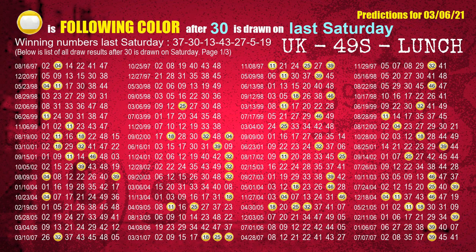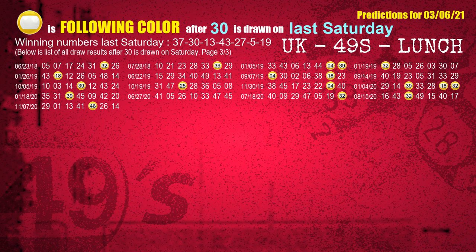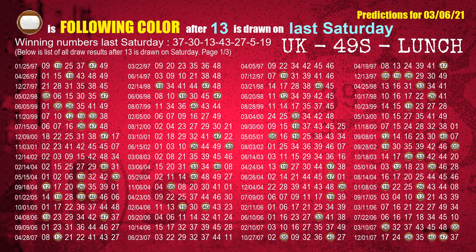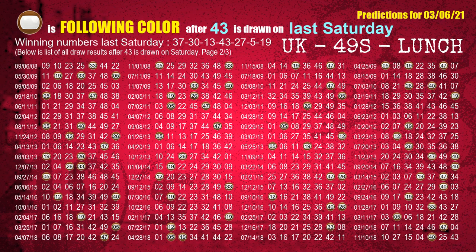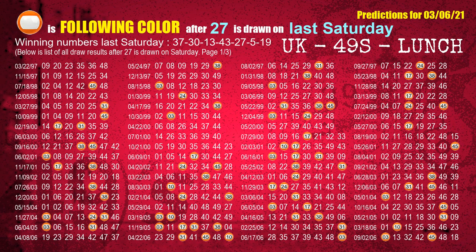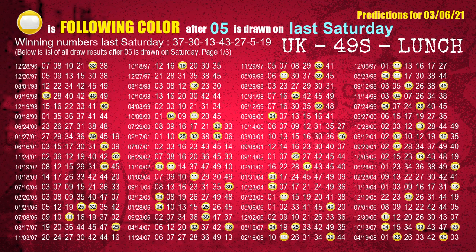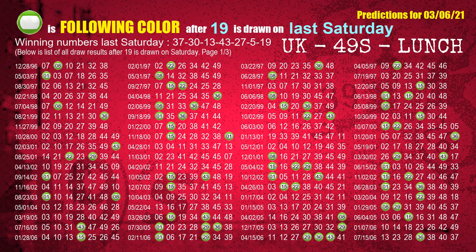The second winning number last Saturday is 30. The most frequently following color is yellow when 30 is the winning number on last Saturday. The third winning number last Saturday is 13. The most frequently following color is brown when 13 is the winning number on last Saturday. The fourth winning number last Saturday is 43. The most frequently following color is brown when 43 is the winning number on last Saturday. The fifth winning number last Saturday is 27. The most frequently following color is orange when 27 is the winning number on last Saturday. The sixth winning number last Saturday is 05. The most frequently following color is yellow when 05 is the winning number on last Saturday. The booster winning number last Saturday is 19. The most frequently following color is green when 19 is the winning number on last Saturday.